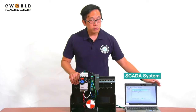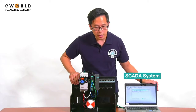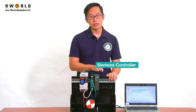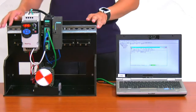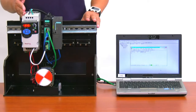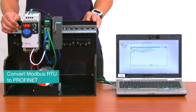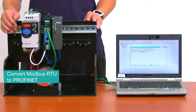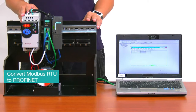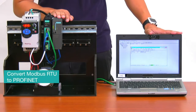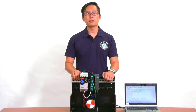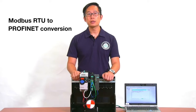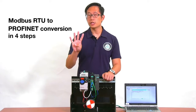Here we have a PC running SCADA software, and we have a VFD that's connected to a Profinet controller to control the speed of this motor. Now to connect the VFD to our control network, we have to convert Modbus RTU protocol, which the VFD uses, to the Profinet protocol, which the controller and the SCADA software use. I'm going to show you how to do all of this with the MGate 5103 in just four easy steps.